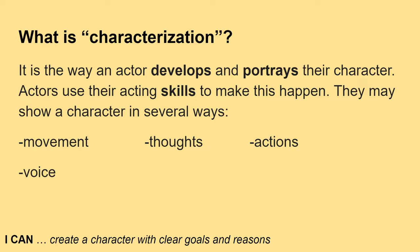Fourth: voice — how does the character sound? Do they sound creepy and evil, or happy and energetic? You can achieve that through your voice. Fifth: dialogue — the words characters say to one another. A character in London in the 1700s is going to sound and talk very differently than a character in present-day Kansas. They'll use different words and say things differently.